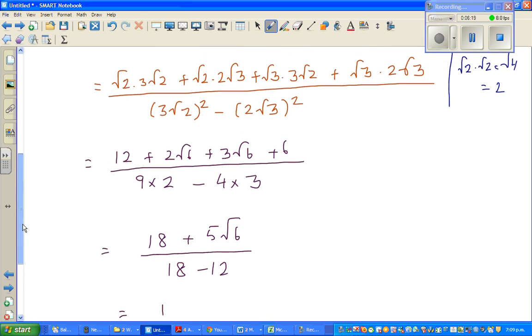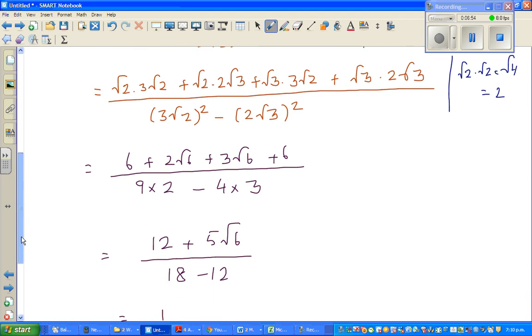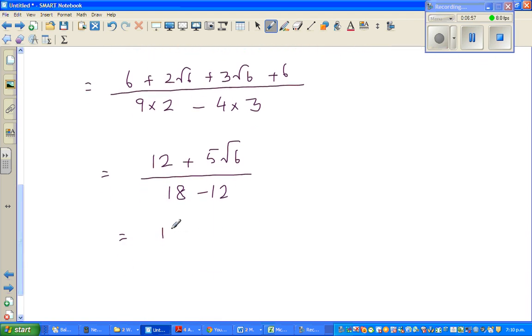Oh, I made a mistake here. Can you see the mistake? This should be 4 times 3 is 12. This is root 2 times root 2 is 2, 2 times 3 is 6. It's always good to check. So this is 6 plus 6 is 12.